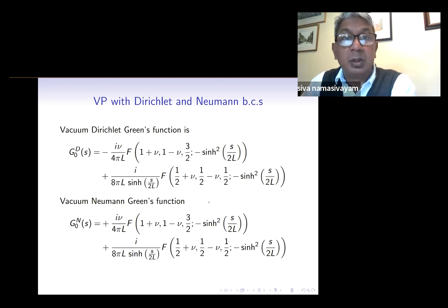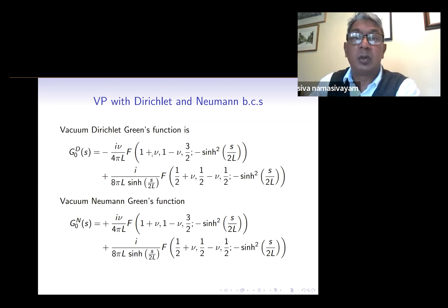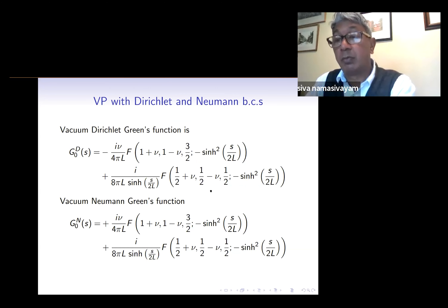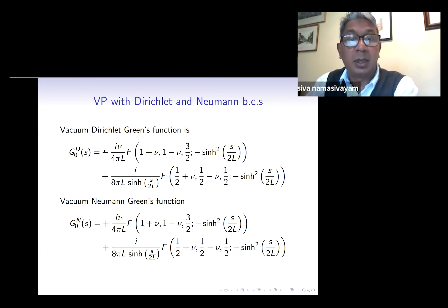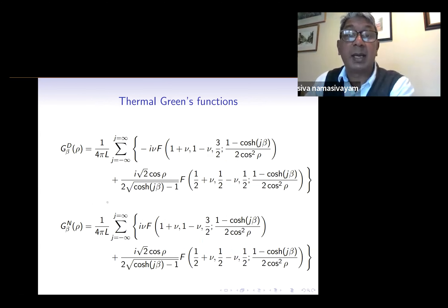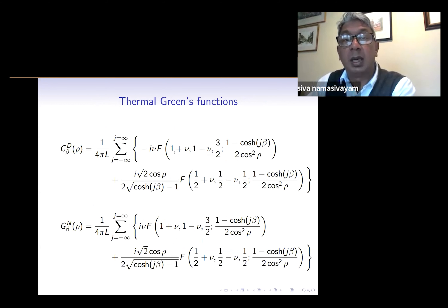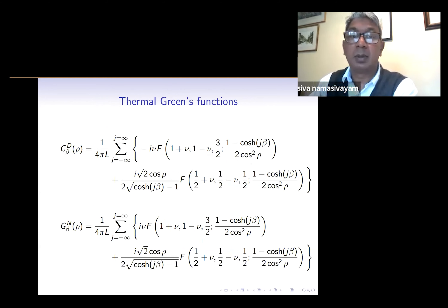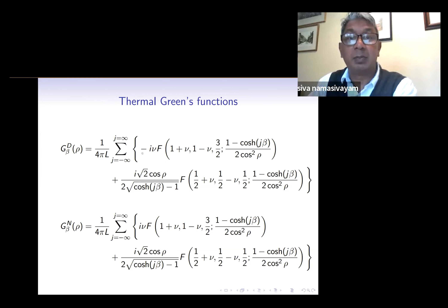The vacuum Green's functions with Dirichlet and Neumann boundary conditions are of the form of hypergeometric functions, which depend on the parameter nu and the proper distance between spacetime points, but interestingly do not depend on the radial coordinate rho — so they respect the background symmetry of the spacetime. The difference between Neumann and Dirichlet is only in the sign of the first term. The thermal Green's functions are also of the form of hypergeometric functions involving nu, but this time they involve the radial coordinate rho, so they break the underlying symmetry of the ADS spacetime, and they are also dependent on inverse temperature beta. Again, the difference between Neumann and Dirichlet is merely the sign of the first term.